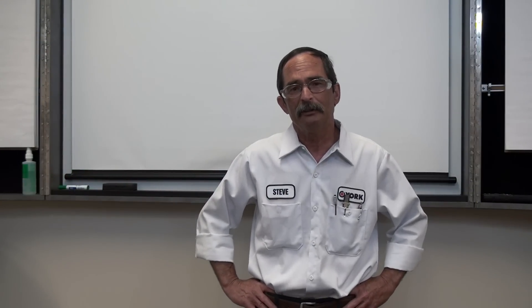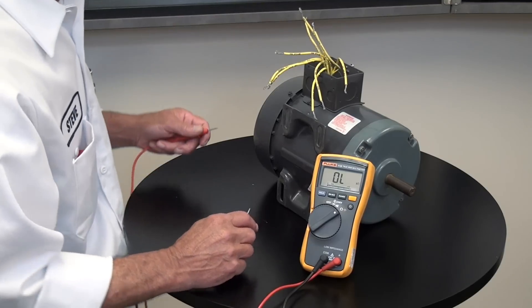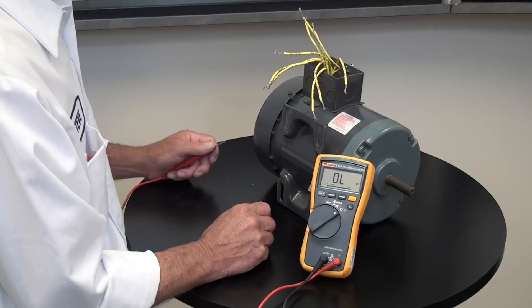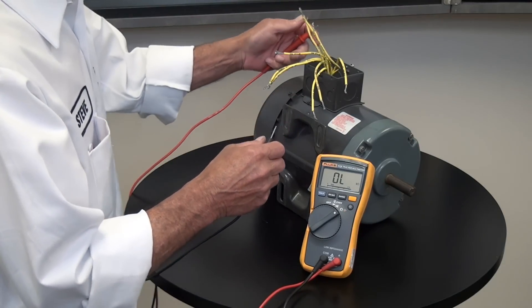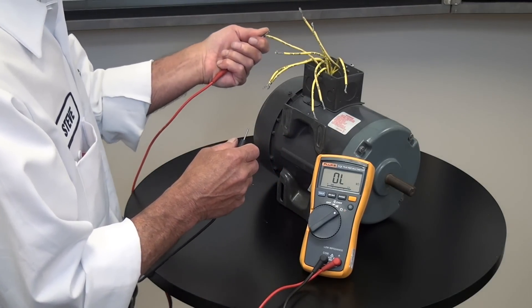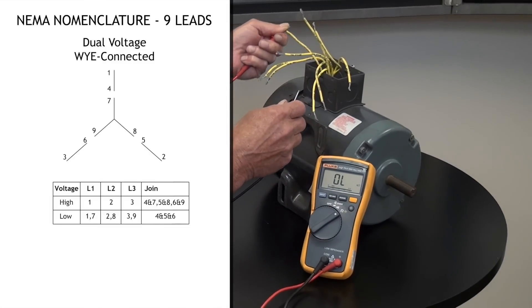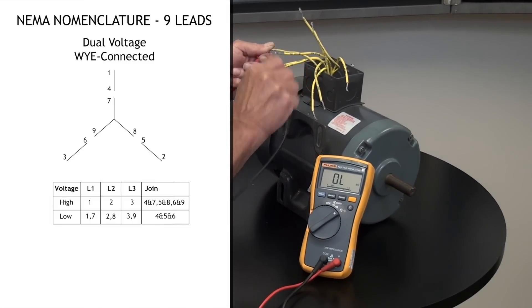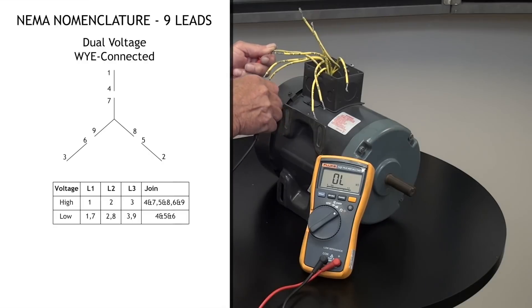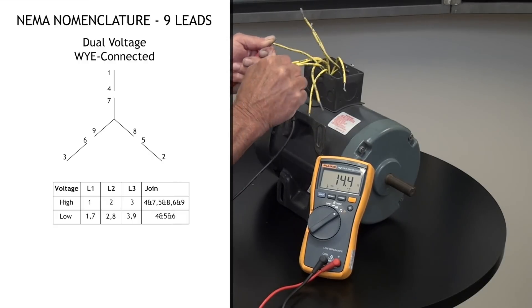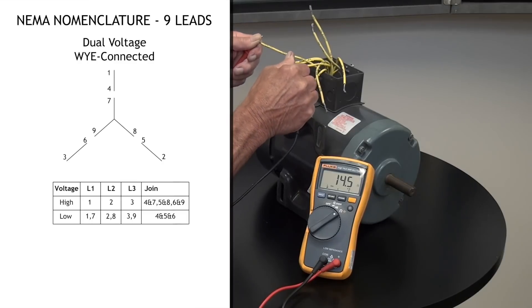If we don't have a connection diagram, we need to determine whether we have a Y or a delta configuration inside the motor. To do that, we take a lead that's already identified — say number two — and check to see what has continuity with it. If we find one lead that has continuity with number two, we continue on.